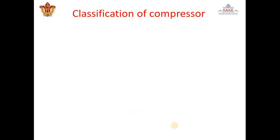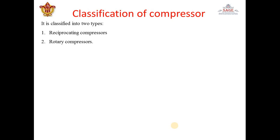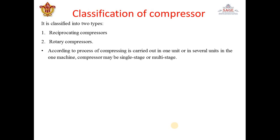Compressors are generally divided into two parts: reciprocating compressor and rotary compressor. In a reciprocating compressor, a part like a piston reciprocates inside a cylinder — similar to a reciprocating pump but with air as the fluid instead of liquid. In a rotary compressor, there is a rotating element, which is the basic criteria of a turbo machine. For this subject, the reciprocating compressor is not our focus — we will study the rotary compressor.